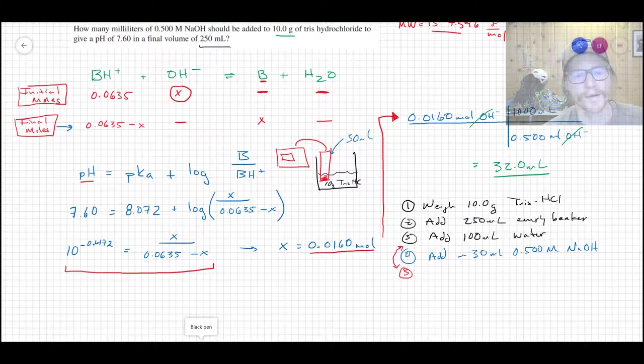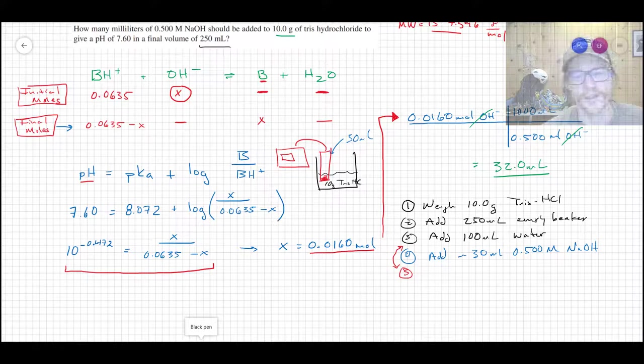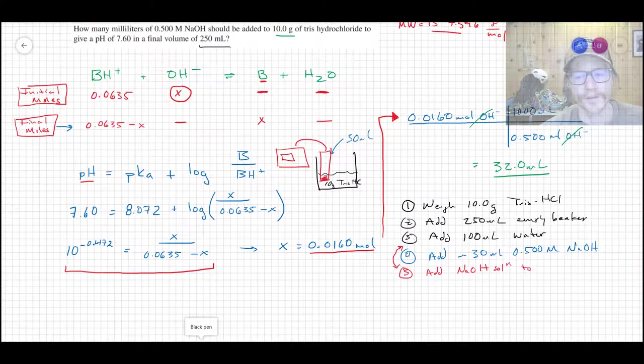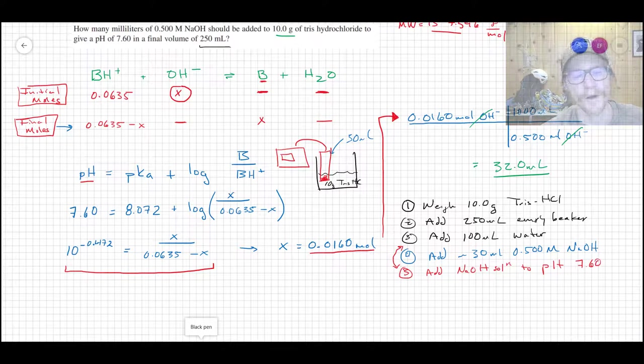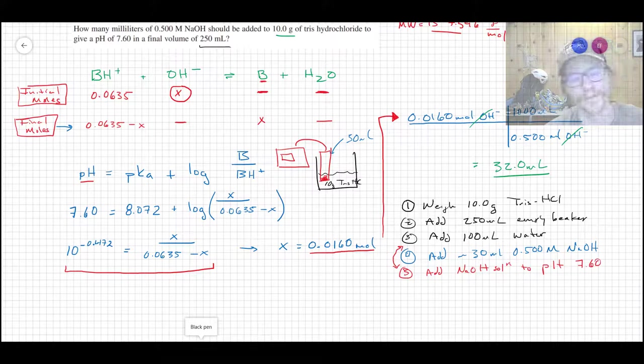So I'd probably go through and add maybe about 30 mLs-ish, add roughly close to, but a little less than 30 mLs of your 0.500 molar NaOH solution. At this point, you'll then just continue to add the NaOH solution to desired pH until you get to pH 7.60. Hopefully you don't overshoot. If you do, then you can just add a little bit of strong acid to go back the other way. That's the beauty of these things. They're totally reversible.